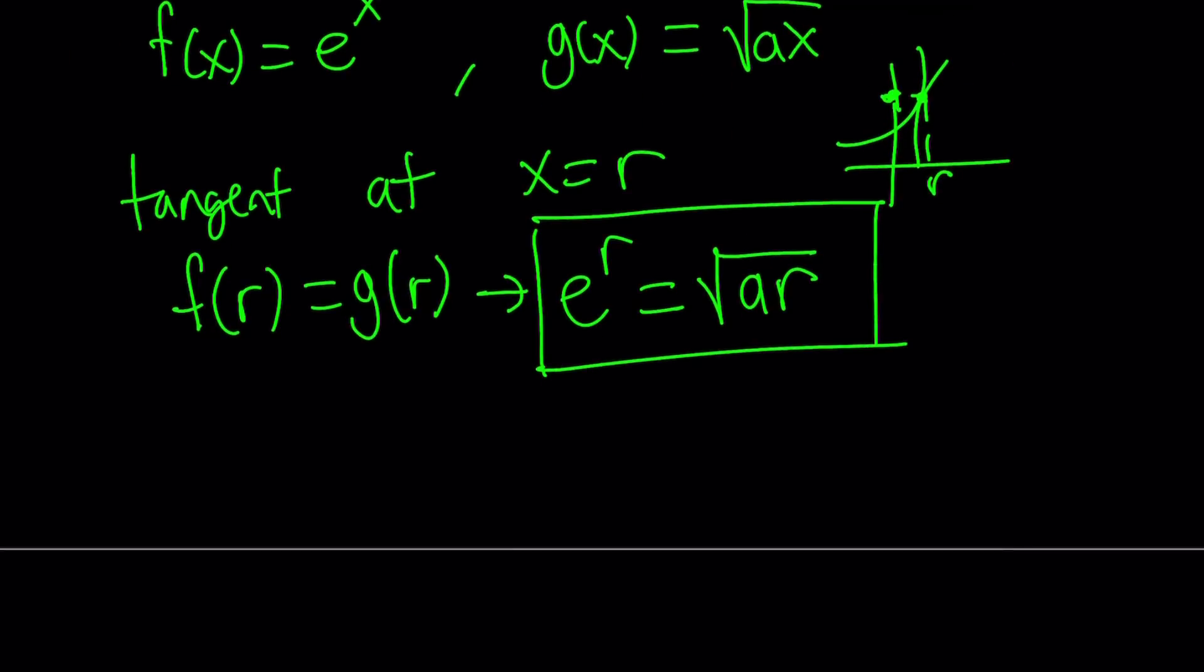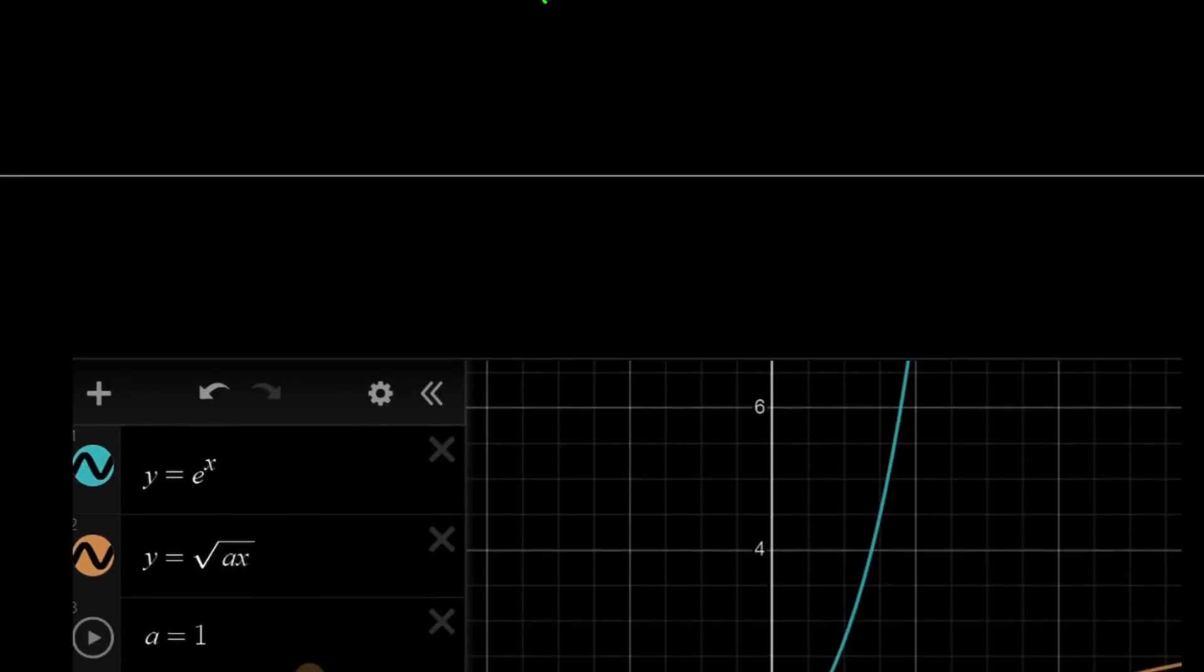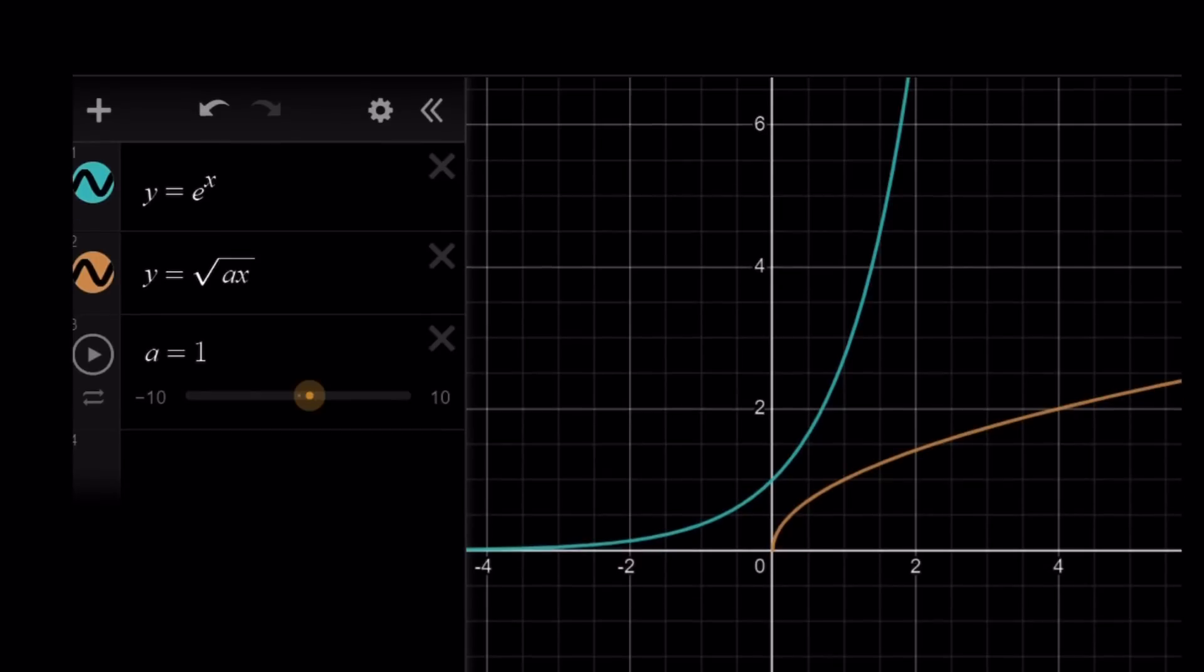Now, if the two curves are tangent, obviously, not only they're going to have the same value, but they will also have a common tangent, which we're going to talk about in a little bit. Because I want to show you the special case scenario first. So we talked about this equation, e to the power x equals square root of ax.